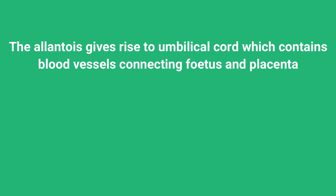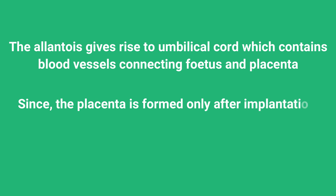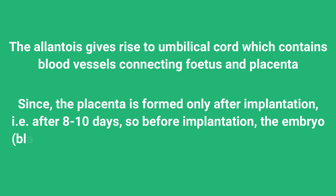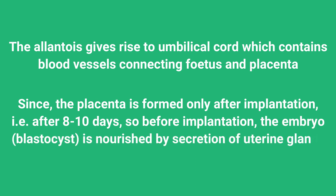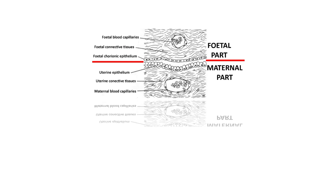Since the placenta is formed only after implantation — that is, after 8-10 days — before implantation the embryo (blastocyst) is nourished by secretions of uterine glands called uterine milk. The placenta is formed from both fetal tissues and maternal tissues, so both fetal and maternal layers are present in the placenta.